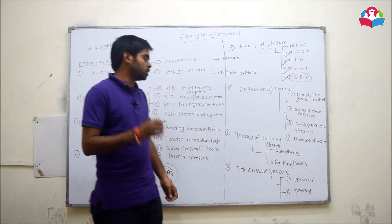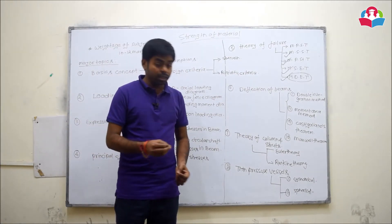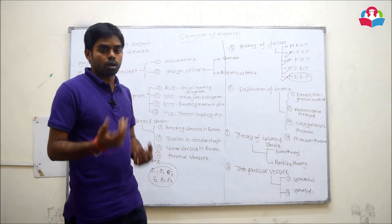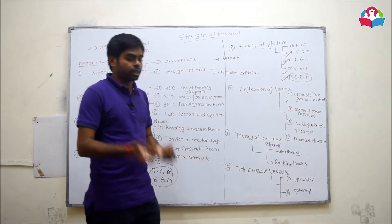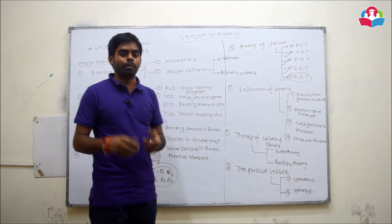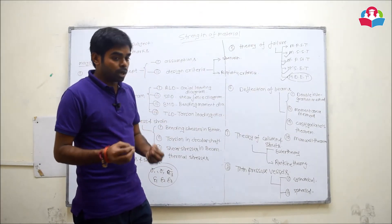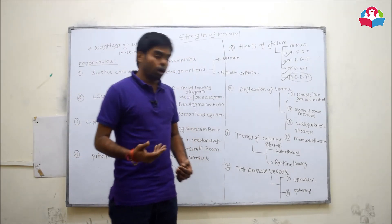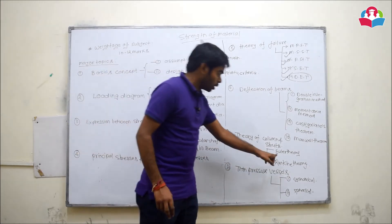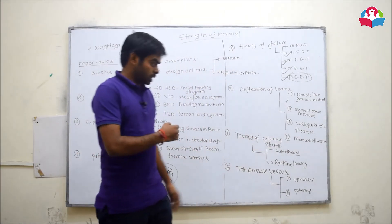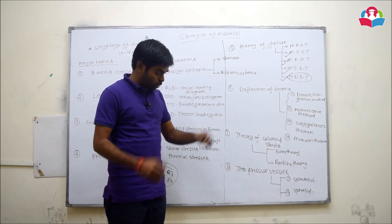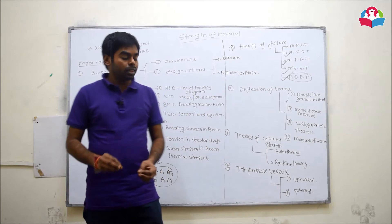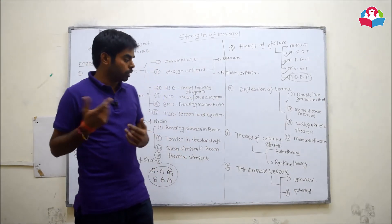The seventh topic is the theory of columns. Columns are classified into three forms: long columns, short columns, and medium columns. Some machine components are treated as medium columns, some as short columns, and some as long columns. To model long column loads, Euler's theory is used. The second model is Rankine theory, which is equally applicable for long columns, short columns, and medium columns. These theories are covered in this seventh topic.